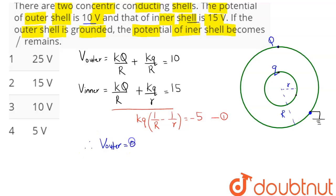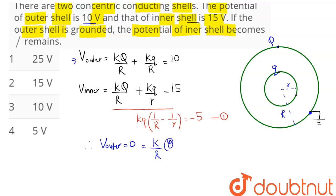With the outer shell grounded, the potential on it is: K·Q/R + K·q/R = 0. Taking K/R common, we get Q + q = 0, so capital Q equals minus small q.